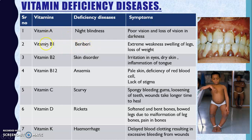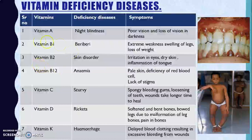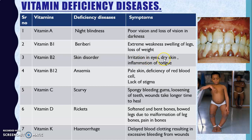Beriberi symptoms include extreme weakness, swelling of the legs, and loss of weight. Vitamin B2 deficiency causes skin disorders — symptoms include irritation in the eyes, dry skin, and inflammation of the tongue, so we should eat plenty of fruits and vegetables to get enough Vitamin B2.